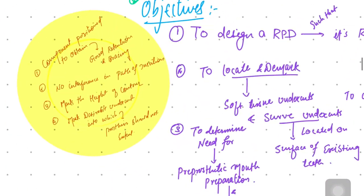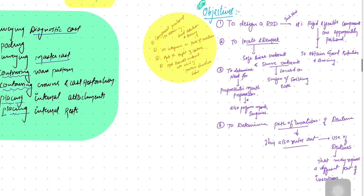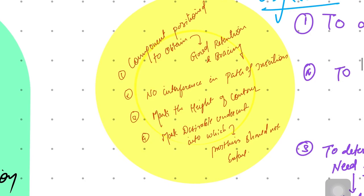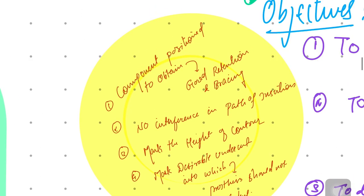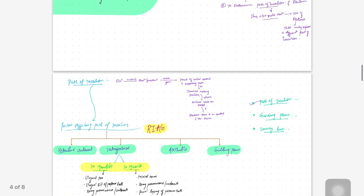The objectives of surveying — there are four. First, component position to obtain good retention and bracing. Second, no interference in the path of insertion. Third, to mark the height of contour. Fourth, to mark the desirable undercut into which the prosthesis should not extend. These four objectives are the main reasons a surveyor is used.